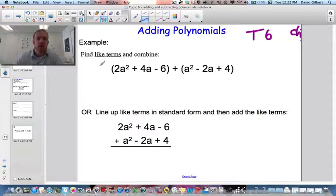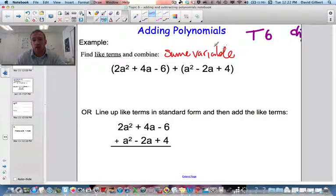You've probably seen some of this before. Basically, you need to find like terms. So like terms means they have the same variables and the same exponents on each of those variables.